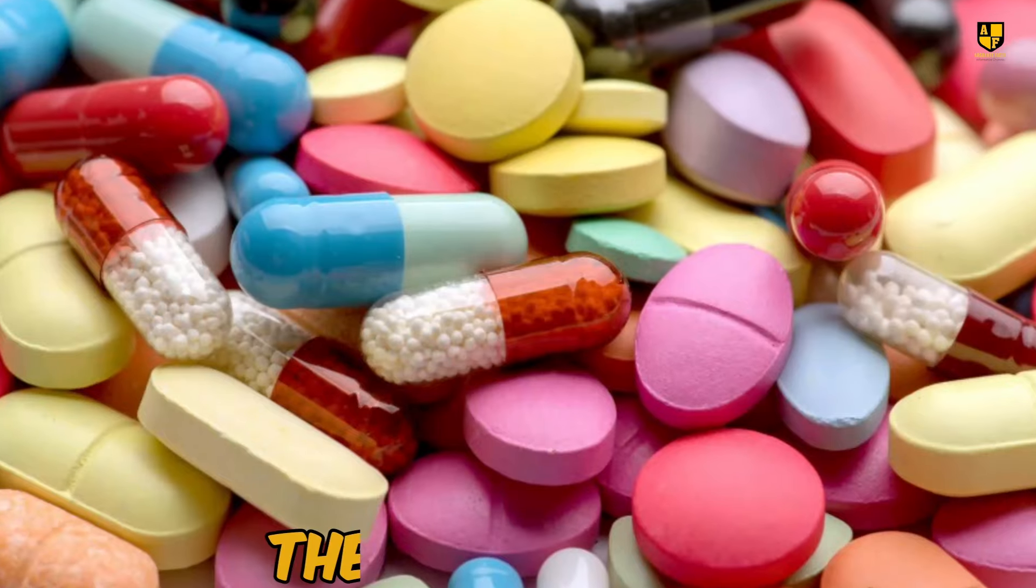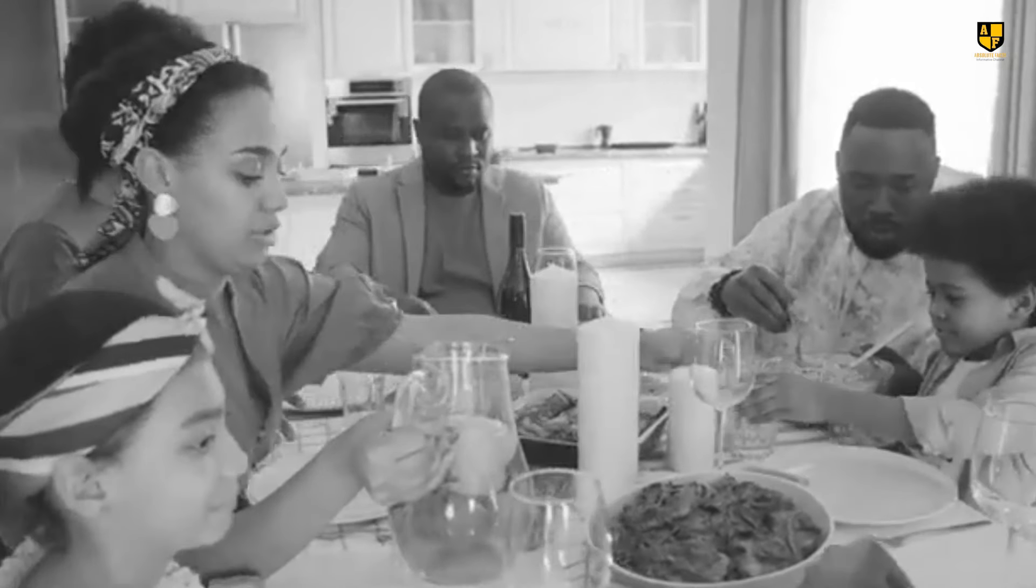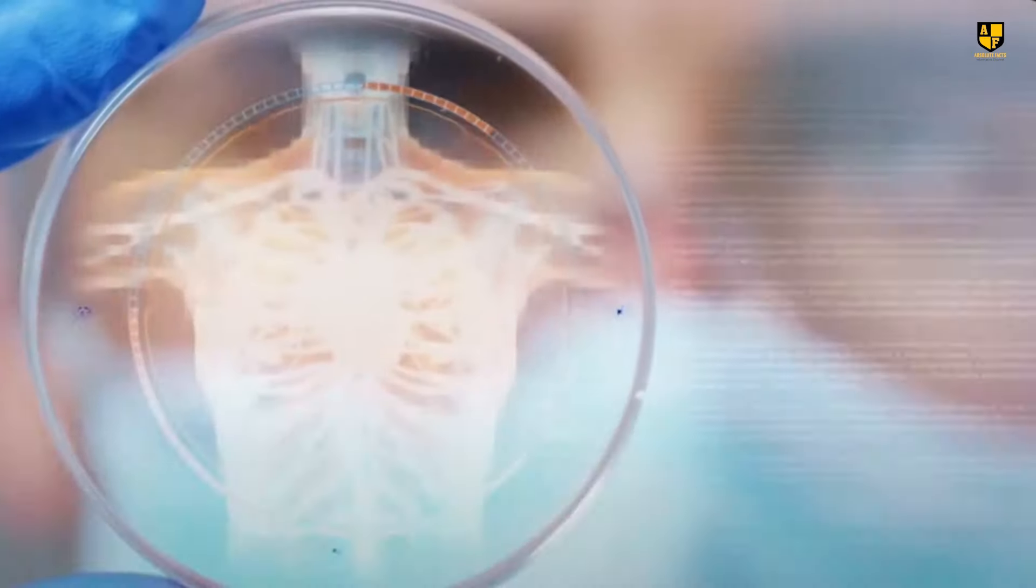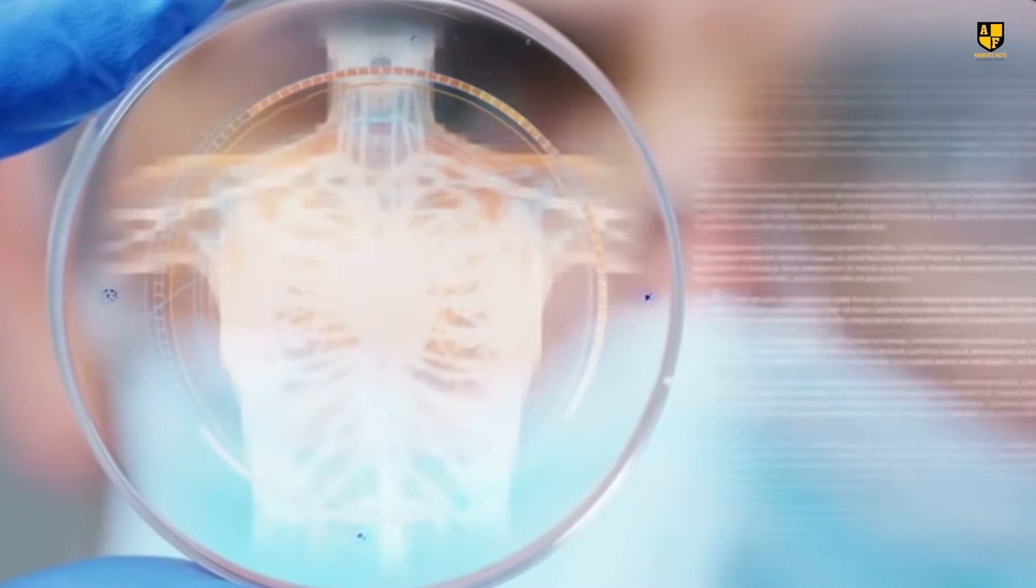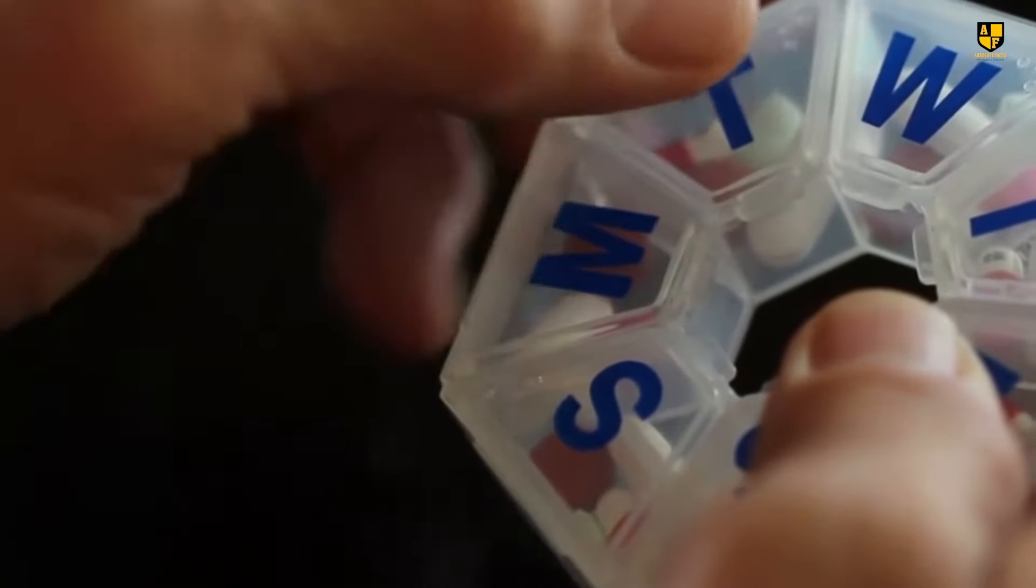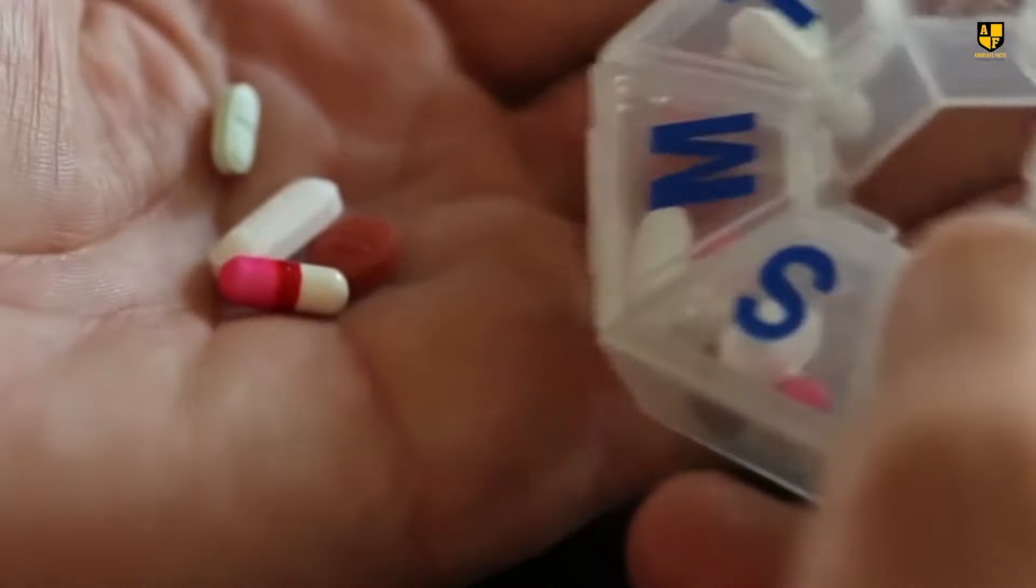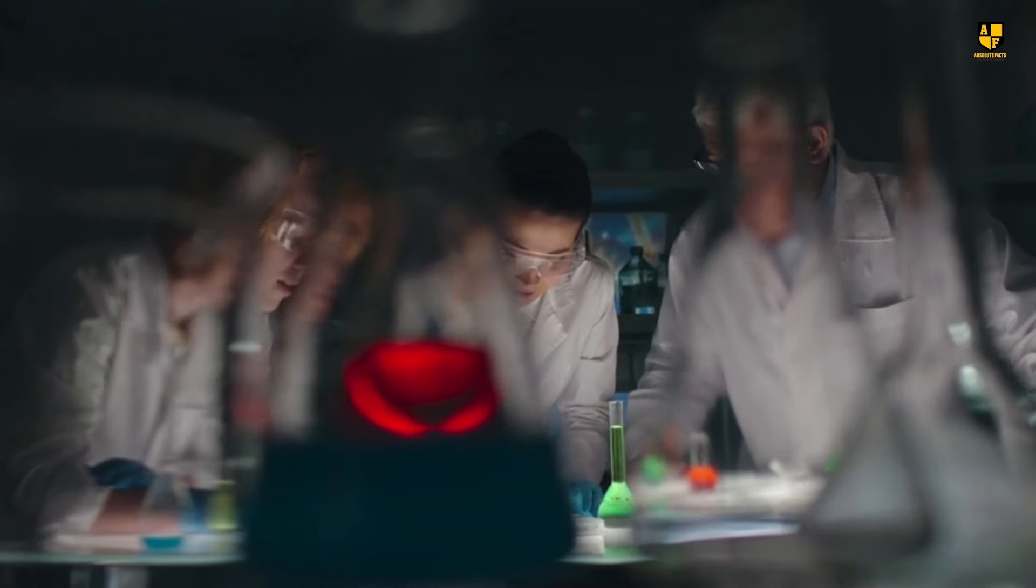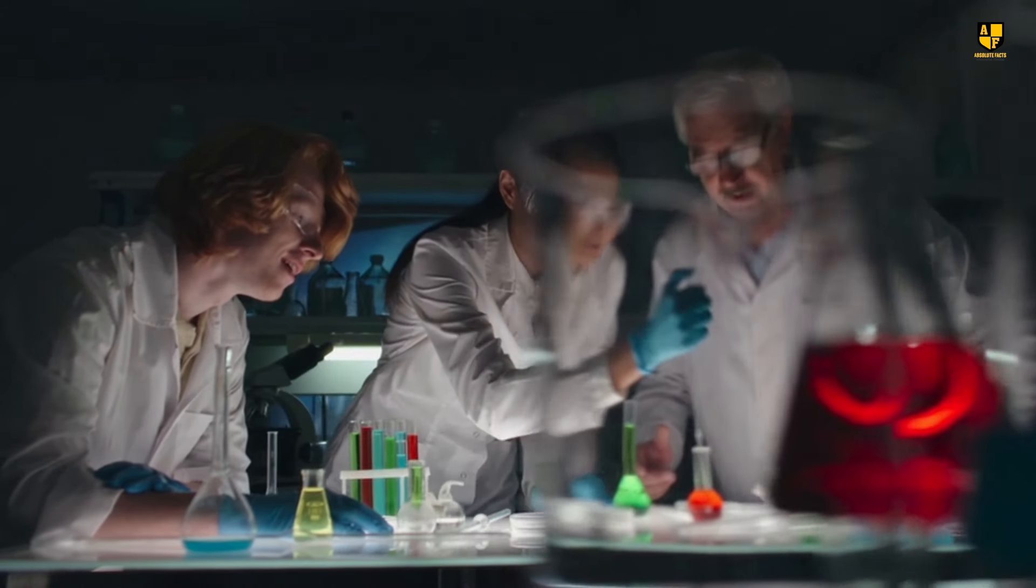Number 2. The Eternal Pill. In the 19th century, families passed down a curious item known as the Eternal Pill. Made from antimony, a toxic semi-metal, it was believed to detoxify the body. Surprisingly, the pill didn't dissolve, allowing it to be handed down from one family member to the next. While the science behind it was dubious at best, this dark green relic stands as an odd reminder of past medical practices.